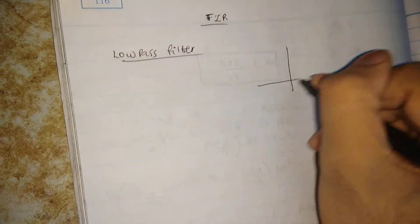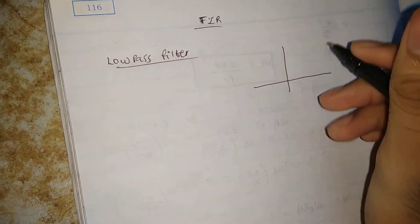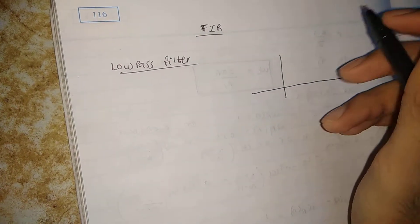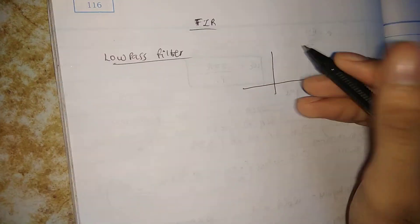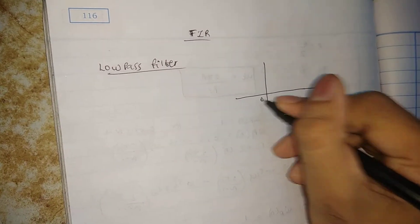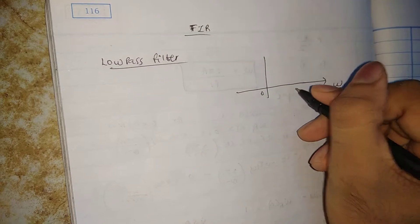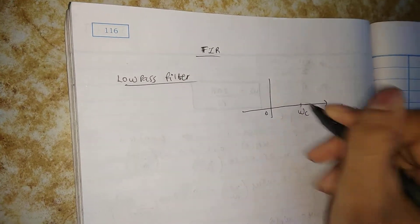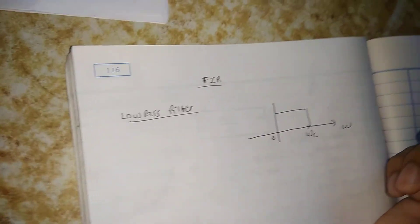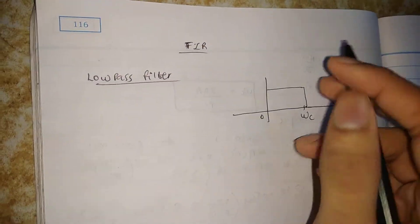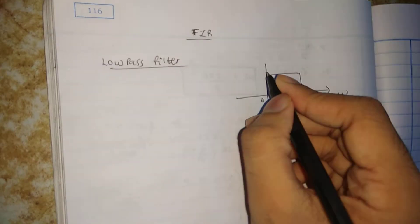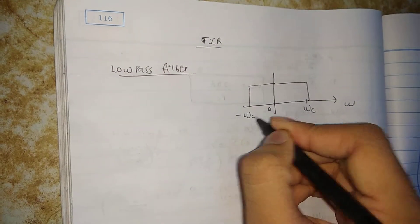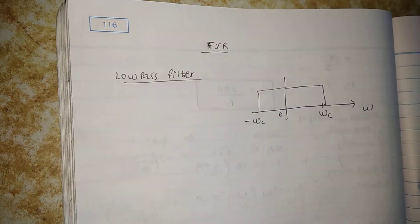First of all, make a graph. This is your omega axis. Your low pass filter starts at 0, goes up to omega C. Exactly opposite, you draw the mirror image over here, and this will be your minus omega C.